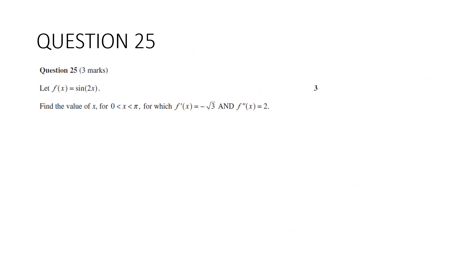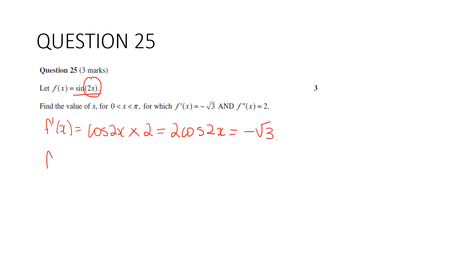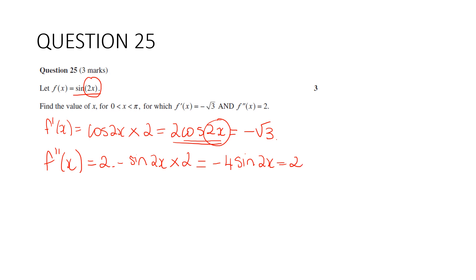Question 25. Let f(x) = sin(2x). Find the value of x for x between 0 and π, for which the first derivative is −√3 and the second derivative is 2. Differentiating using the chain rule: f'(x) = 2cos(2x) = −√3. For the second derivative, again using the chain rule: f''(x) = −4sin(2x) = 2. So we have two equations: cos(2x) = −√3/2 and sin(2x) = −1/2.